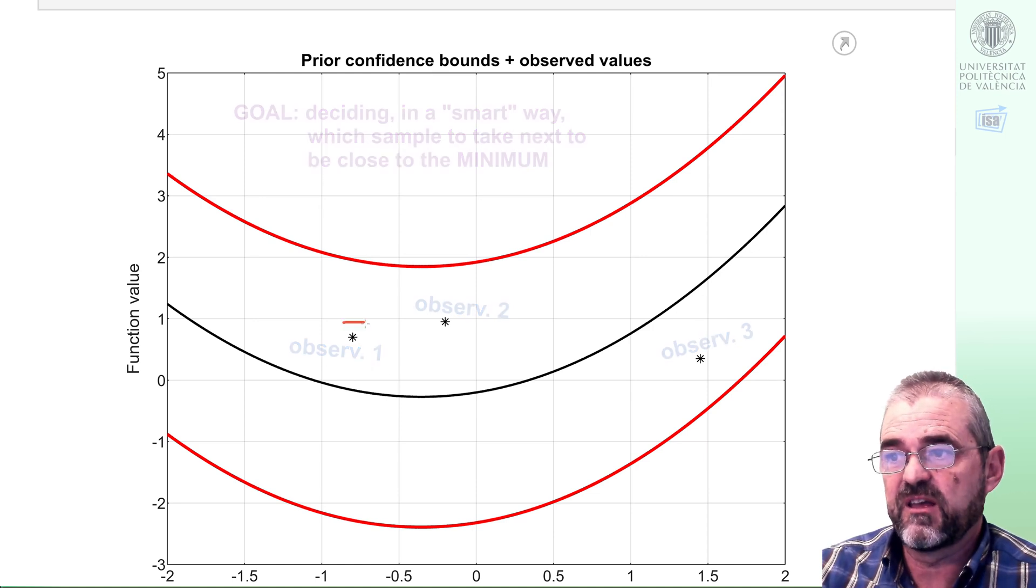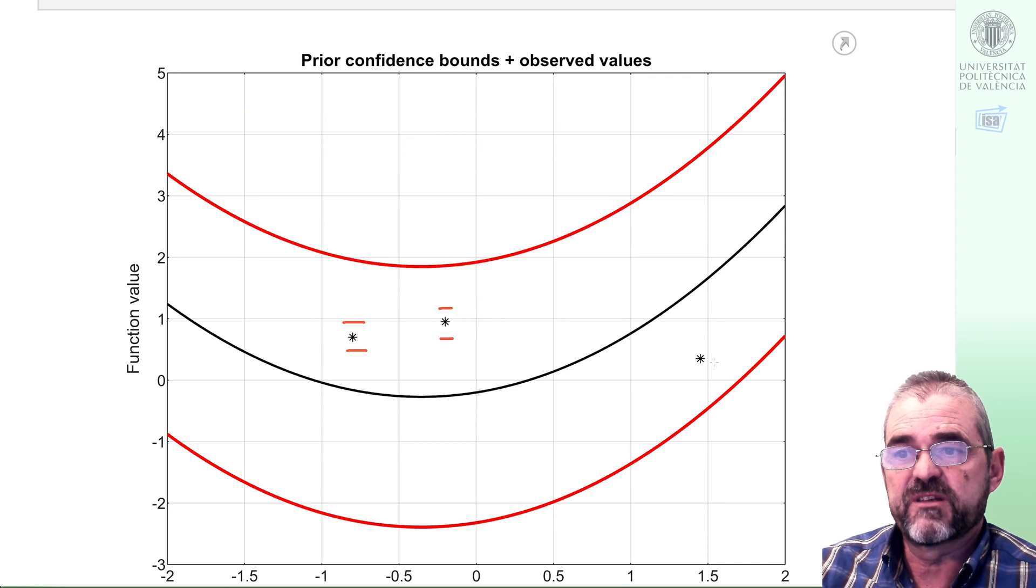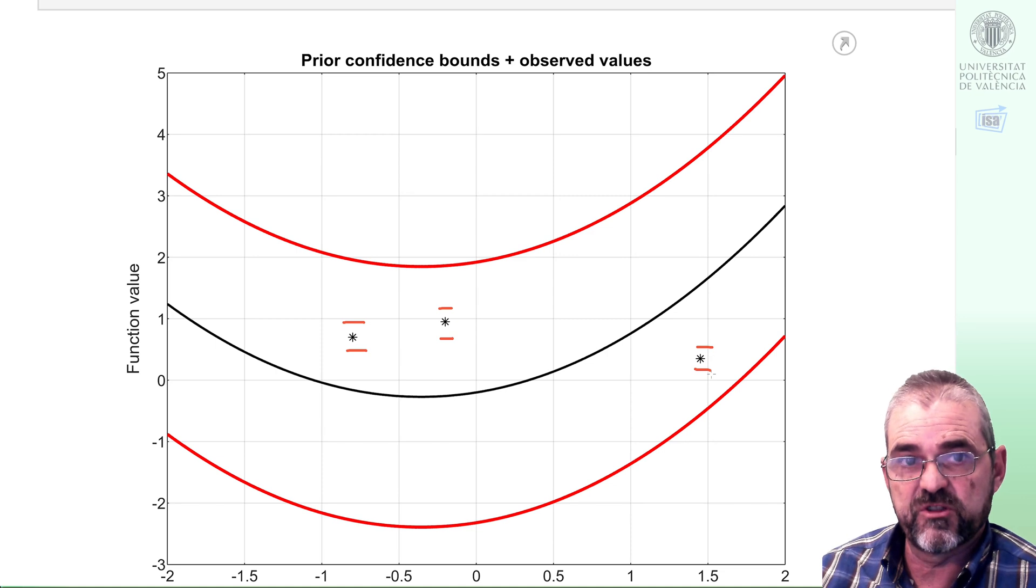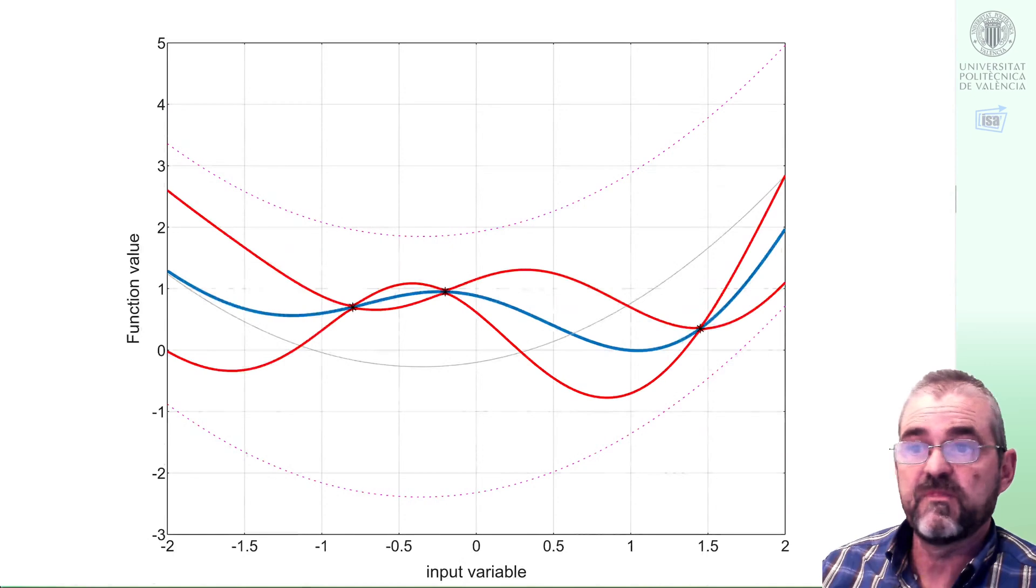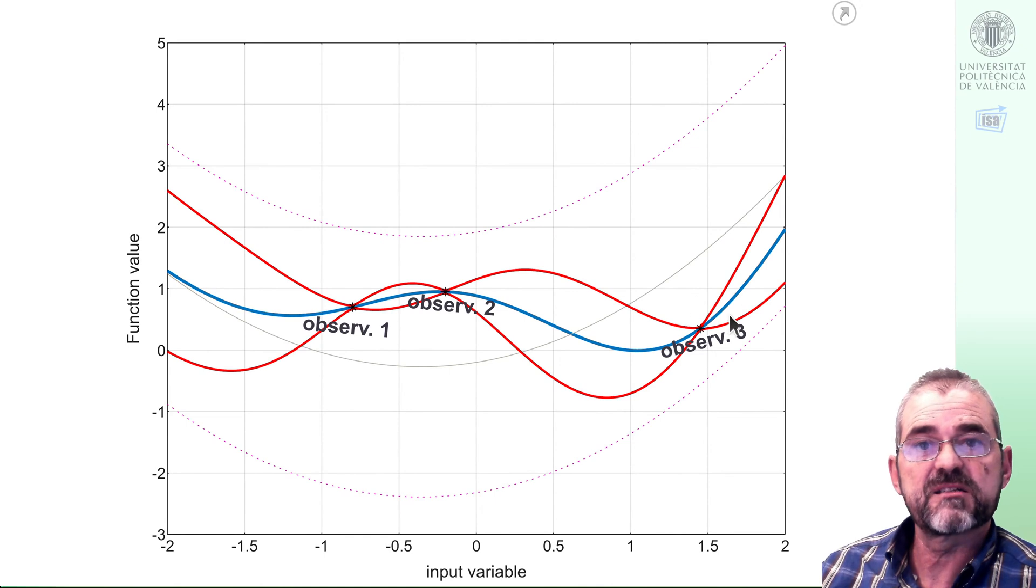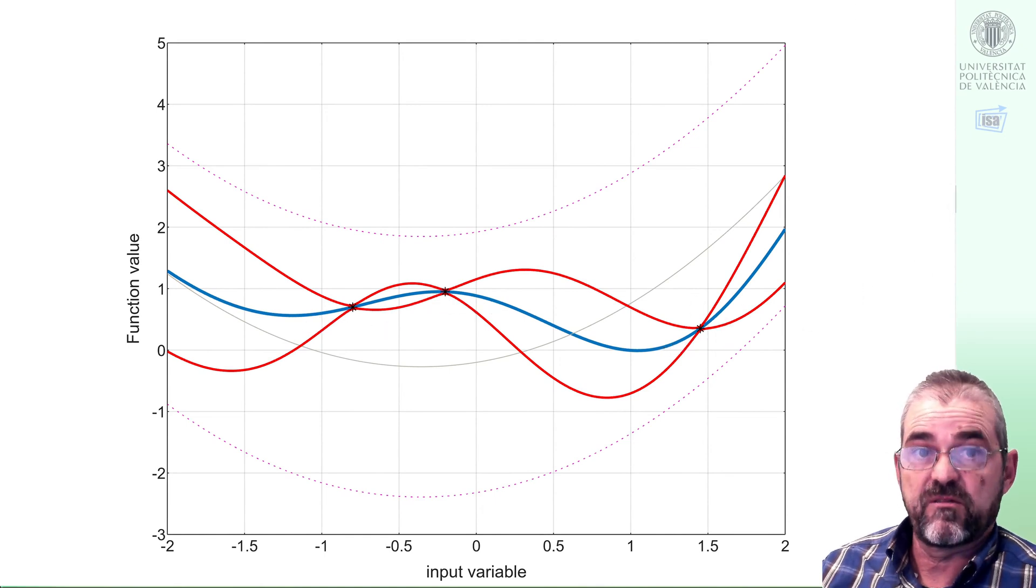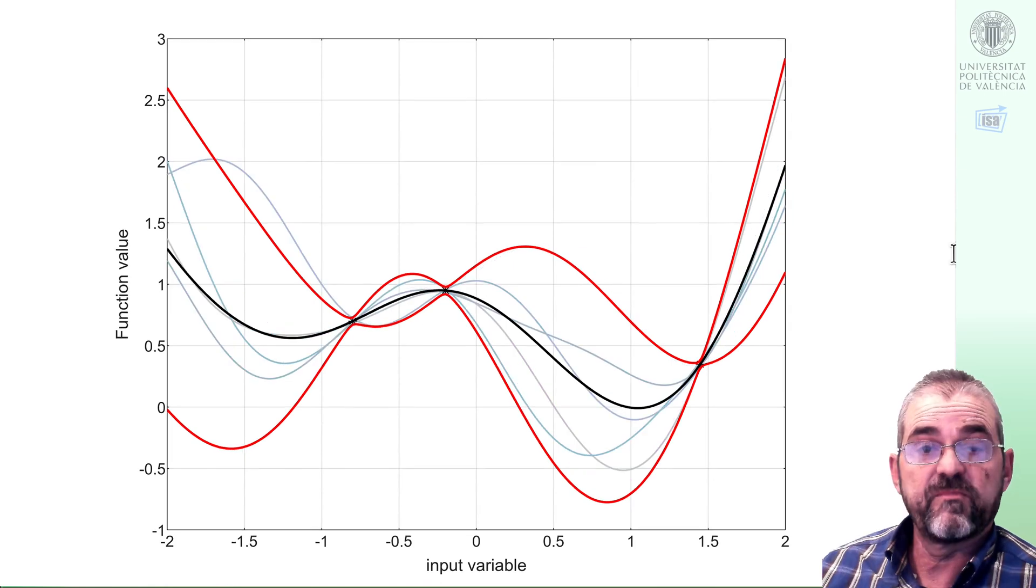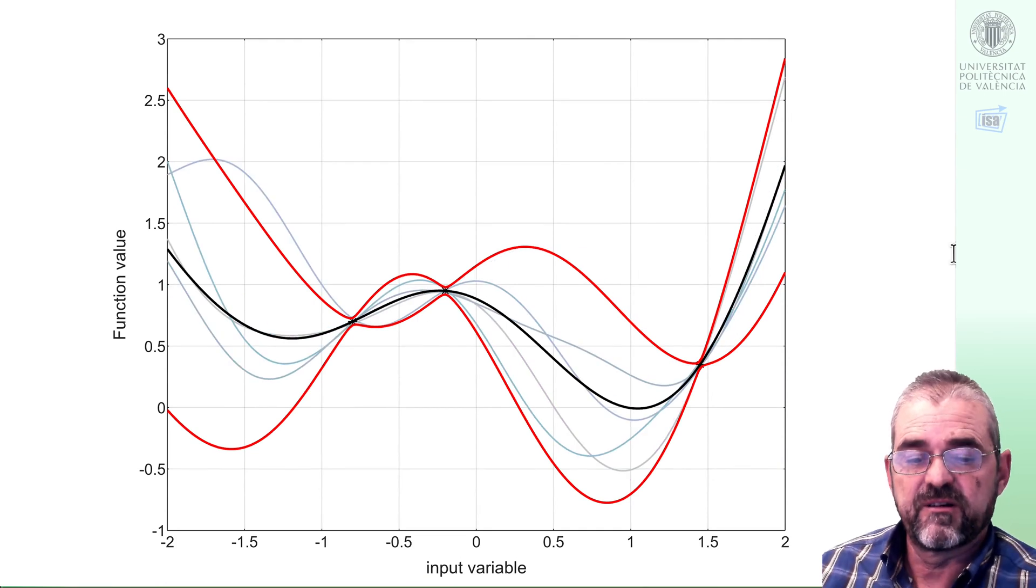Or, well, maybe if I have some measurement noise, the ones that pass in a band of plus minus two standard deviations of the measurement noise. So computing that is called computing the posterior. This is the posterior mean in blue and confidence interval 95% in red. So all of them pass through the black stars and throwing the dice we can get some realizations like the ones we see here.